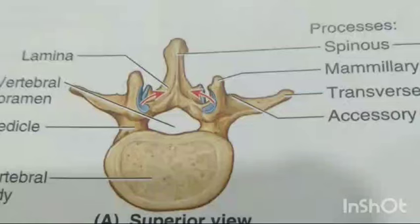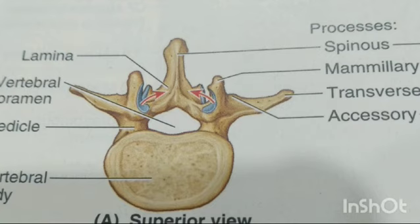Lumbar vertebrae are in the lower back between the thoracic and sacrum. Characteristic features of lumbar vertebrae are their large size, body, spinous processes, long spinous process, accessory transverse and mammillary processes, and articular facets. Because the weight they support increases towards the inferior end of the vertebral column.